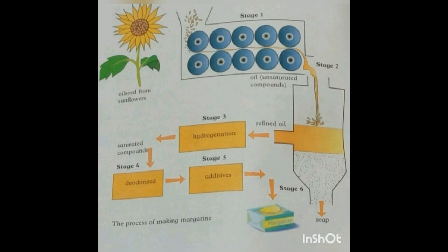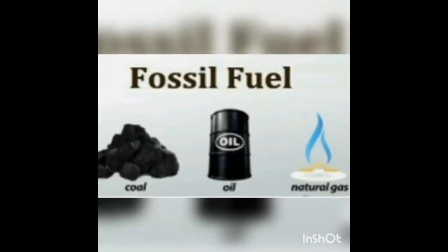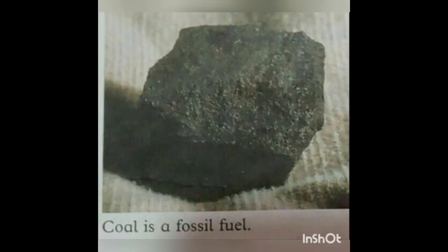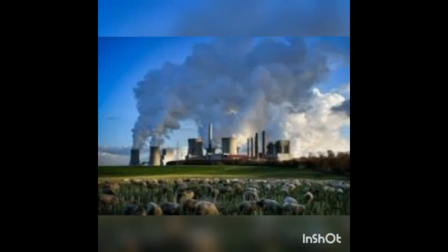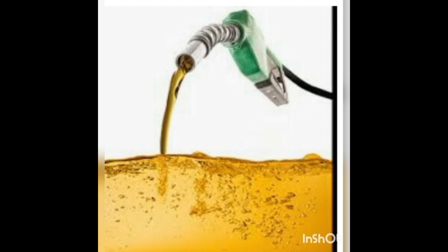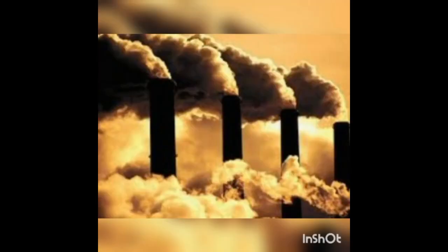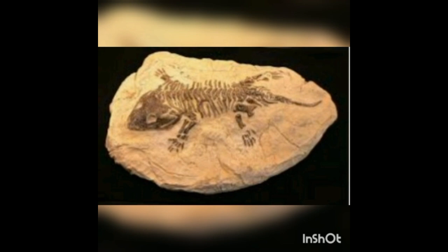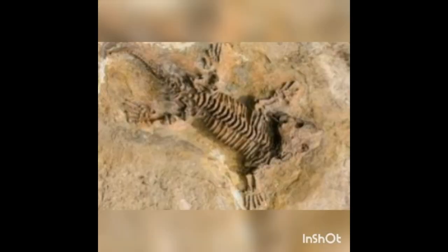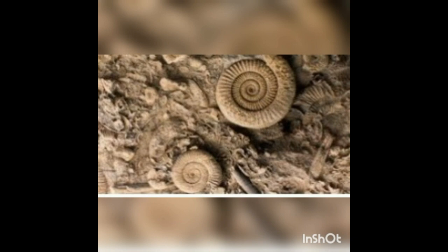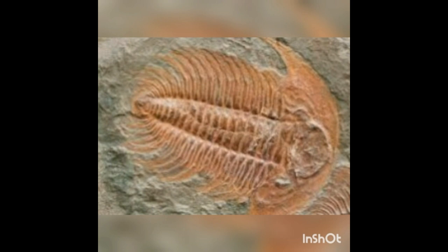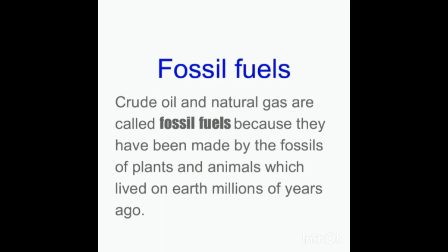Now we discuss fossil fuels. Fuel is a substance that releases energy and light when burned. Fossils are animals or organisms that are naturally preserved beneath the surface of the earth. Crude oil and natural gas are called fossil fuels because they have been made from the fossils of plants and animals that lived on earth millions of years ago.